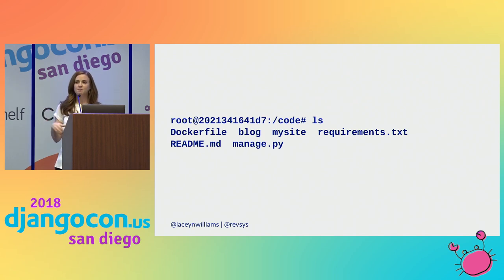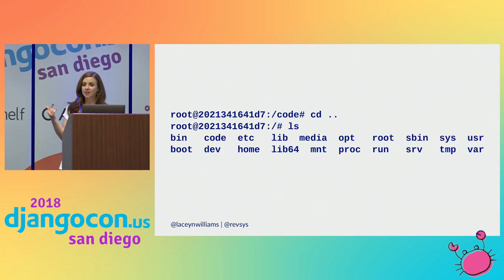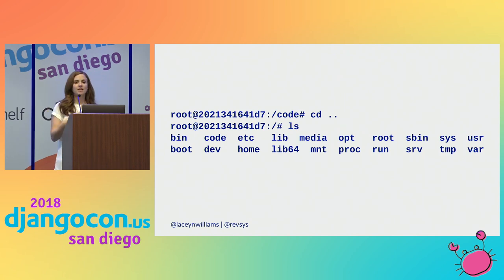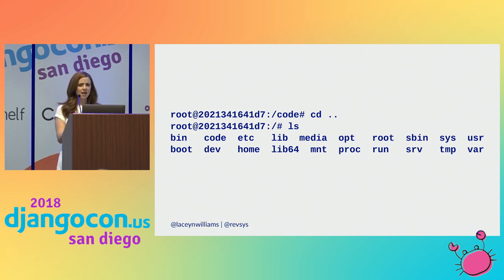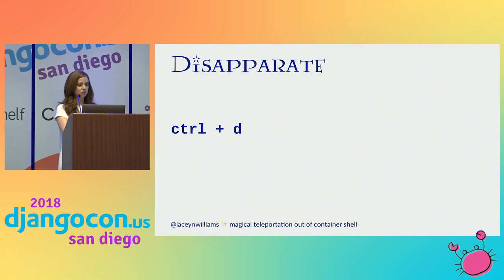We can also hop into our container specifically using the docker exec command — docker exec -it and the ID of your container, which you can get from docker container ls, and then bash. Once you're there, you can see that you're right there in your code directory because you specified that with the WORKDIR command in your Dockerfile. When you reveal the contents of this directory, you'll see your Dockerfile and your manage.py file, confirming your code was copied over. The container also has its own set of directories doing its own thing.